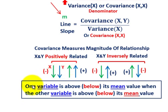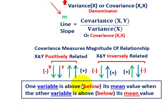What covariance is saying here is: if one variable is above or below its mean value, what is the other variable doing relative to its mean? One variable is above its mean when the other is above its mean, or one variable is below its mean when the other is below its mean. You're looking at the relationship based on their mean values when you make the comparison.